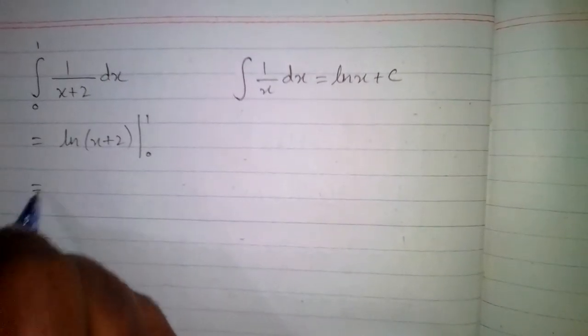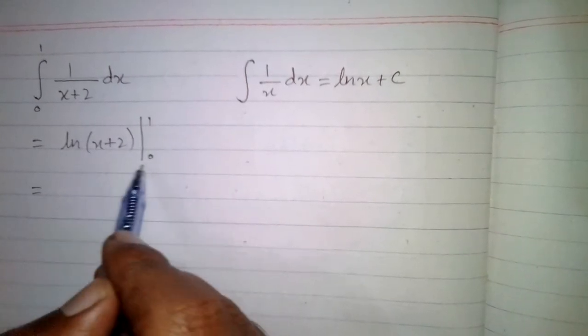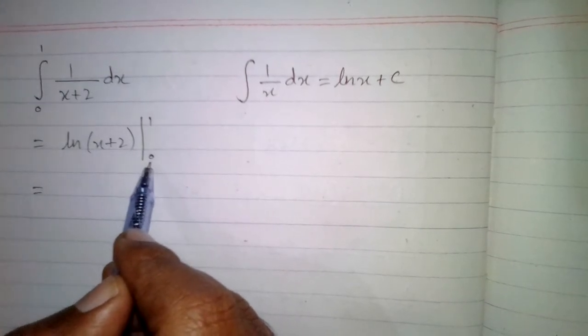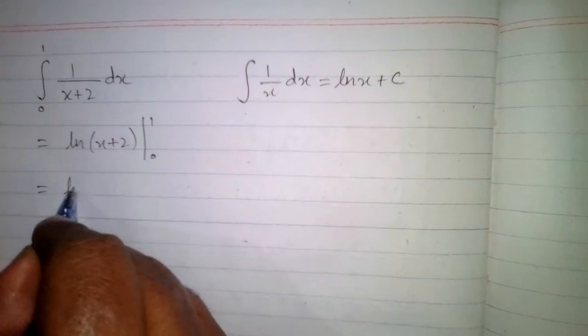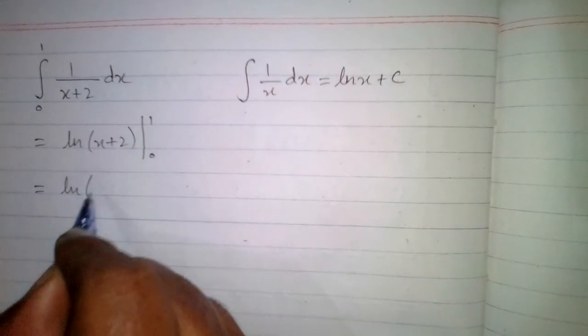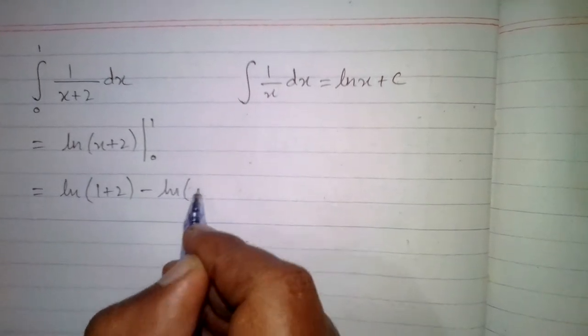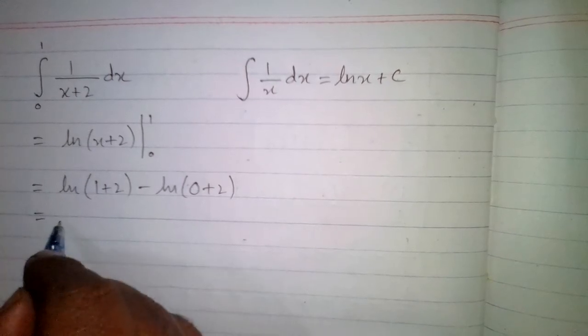Now we will apply the limits. First we will put 1 in place of x, and then we will put the value 0 in place of x and subtract these functions. So we have ln of 1 plus 2 minus ln of 0 plus 2, which gives us